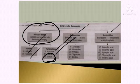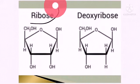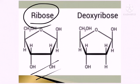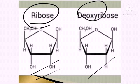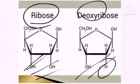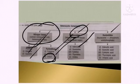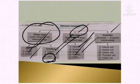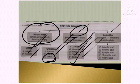When adenine combines with sugar, it becomes adenosine (a nucleoside). The sugar can be ribose sugar in RNA or deoxyribose sugar in DNA — deoxyribose is missing one oxygen compared to ribose. Similarly: guanine + sugar = guanosine; cytosine + sugar = cytidine; thymine + sugar = thymidine; uracil + sugar = uridine. These are all nucleosides, with names ending in '-osine' or '-idine'.